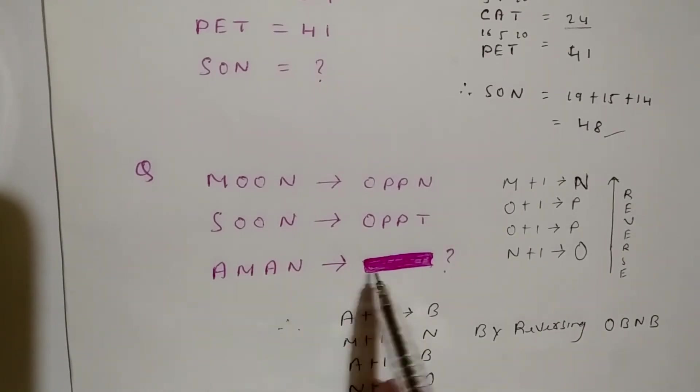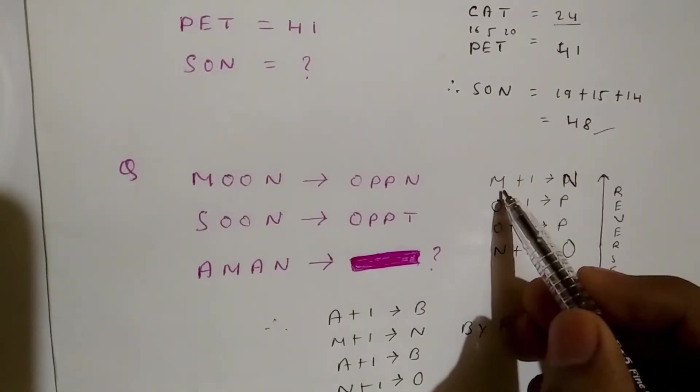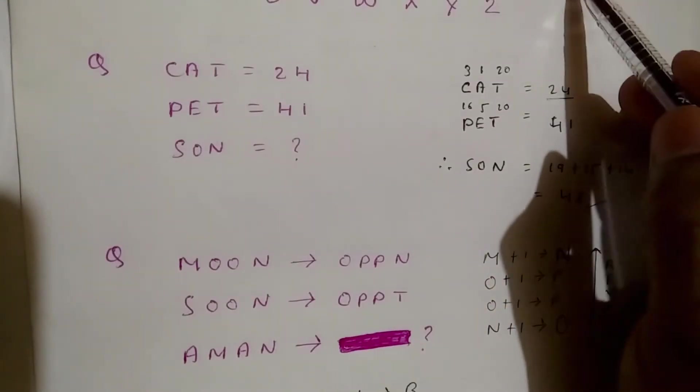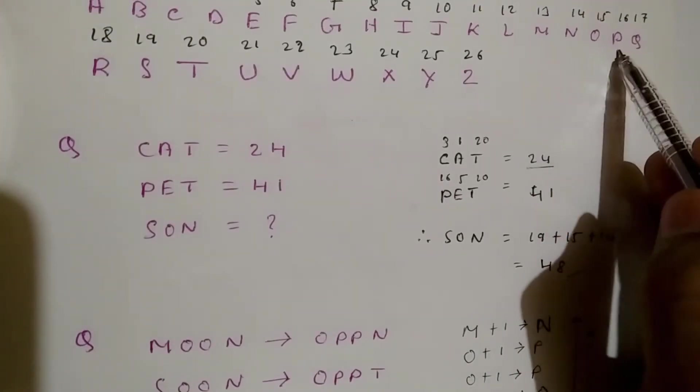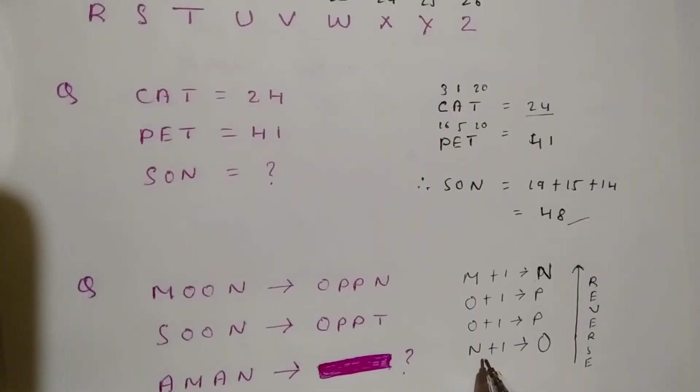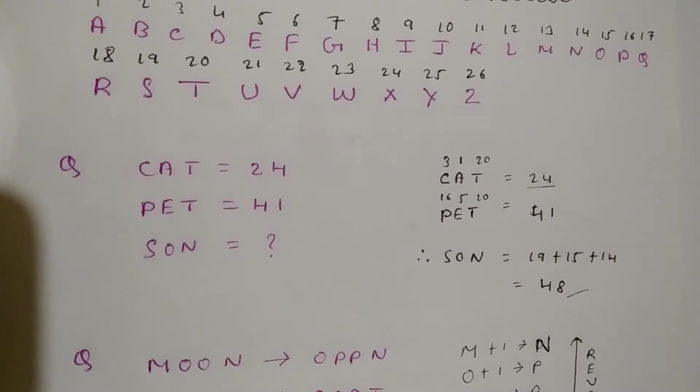Suppose we can do this: M plus 1 equals N. What comes after M? N. What comes after O? P. What comes after O? P. What comes after N? O. So we increase the number by 1, and we get N, P, P, O.